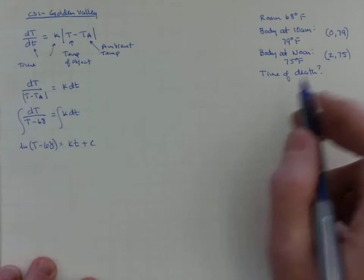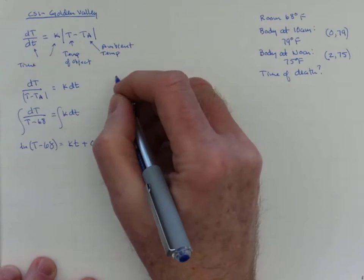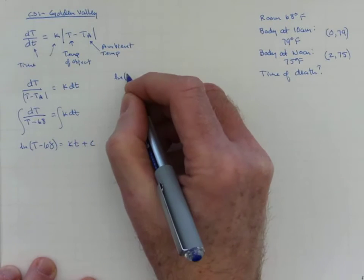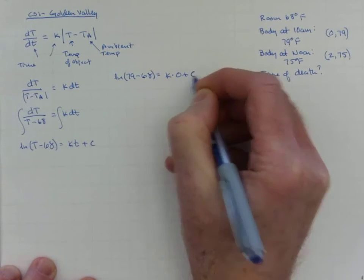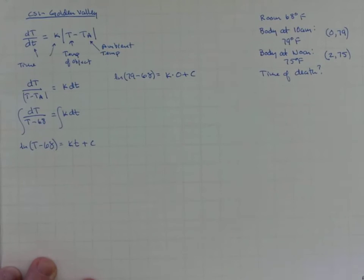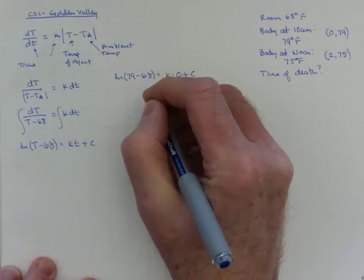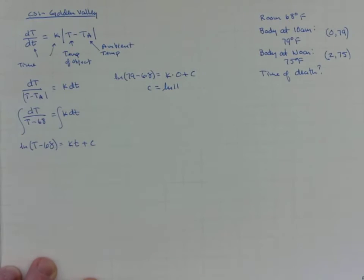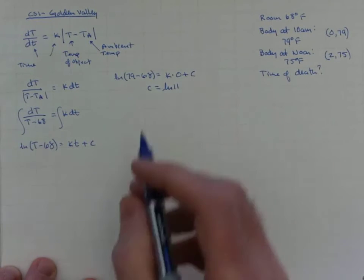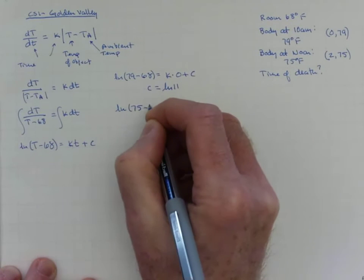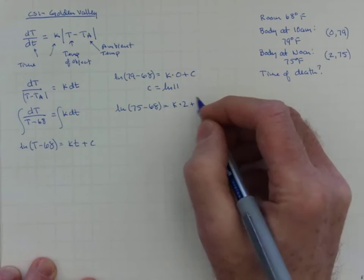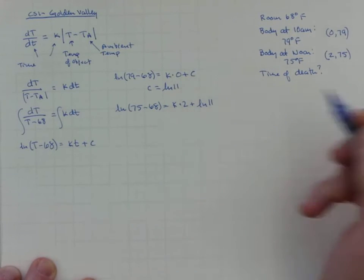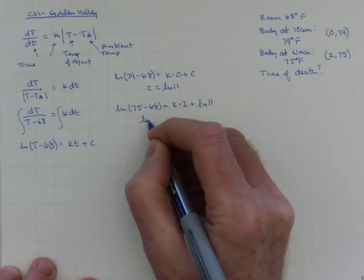I can plug in. I can stick in the ordered pair (0, 79) and I have the natural log of (79 - 68) equal to k times 0 plus c. Here's where that 0 really comes in handy because c is just the natural log of (79 - 68), also known as the natural log of 11. Let's plug in the other ordered pair. We can say that the natural log of (75 - 68) is k times 2 plus the value of c that we now know to be natural log of 11. We have the natural log of 7.